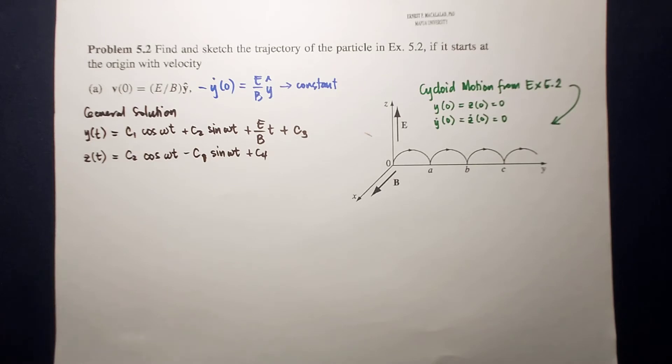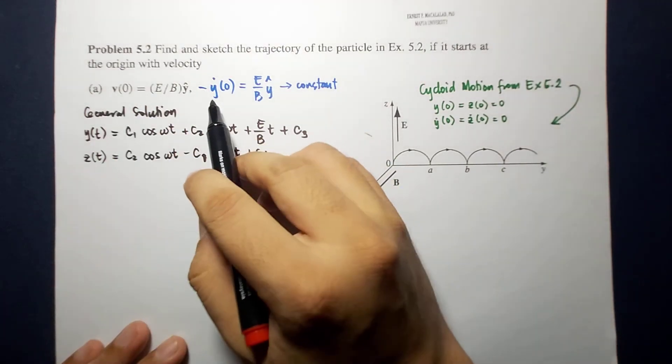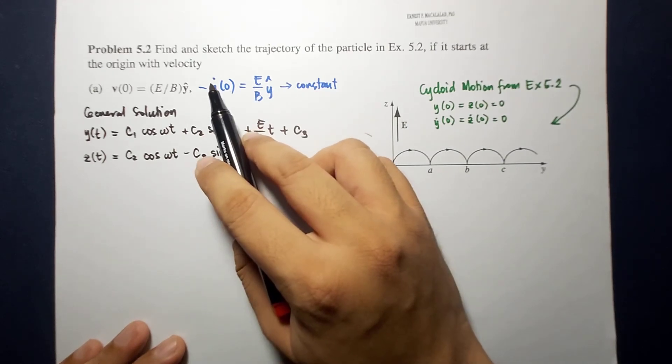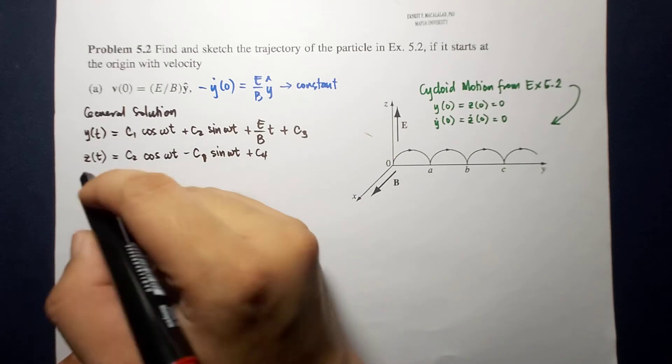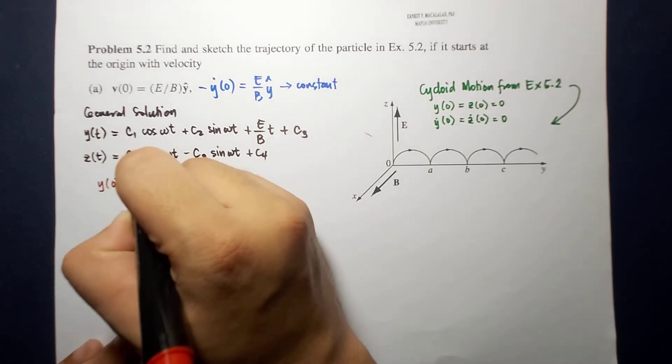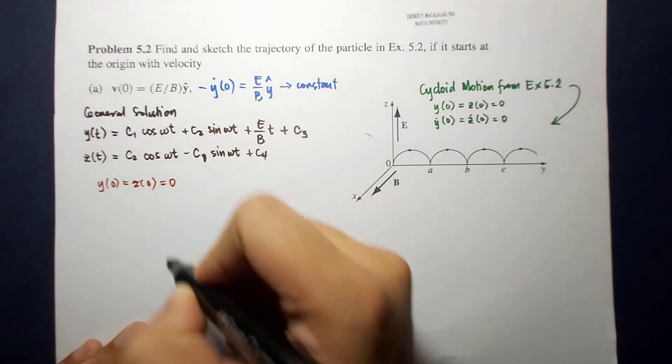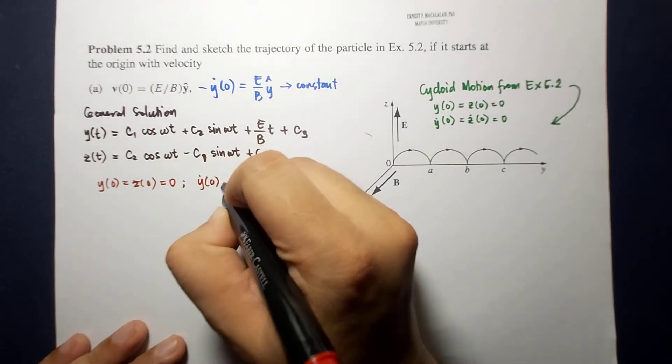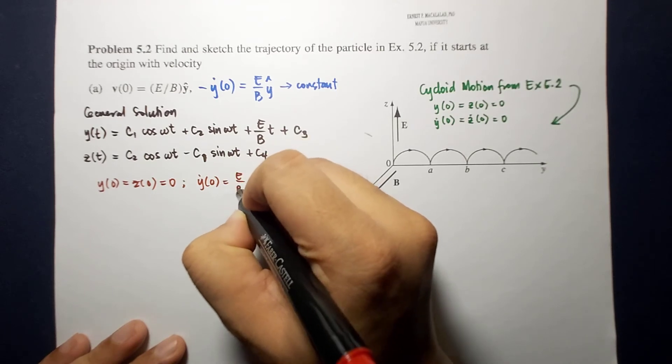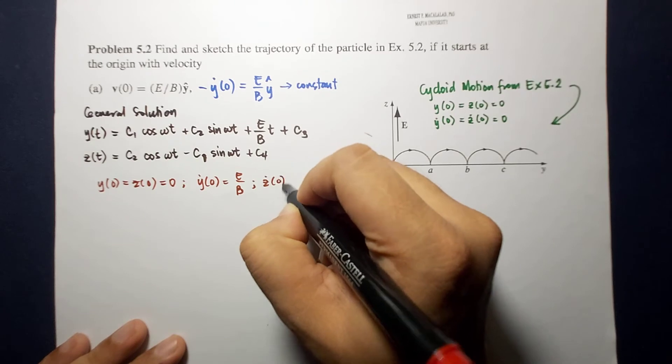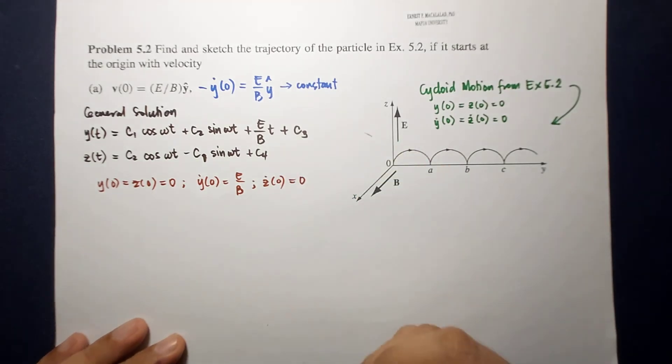So, based from our problem, the initial conditions would be this for y dot and it started from the origin. So, y and z at time equal to 0 is 0. y dot is e over b while z dot at time equal to 0 is 0.